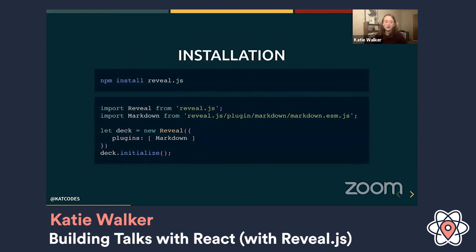If you're familiar with npm and Node, it's really easy to install Reveal. There is an npm package available and you just pull it in like any other Node module, give it some parameters to initialize it. In this case it's just got the Markdown plugin and then it loads up and does all the fun stuff for you. You can also use it without npm — if you just want plain HTML, CSS, JavaScript, you can pull in a script from a CDN. Pretty neat to set up either way.